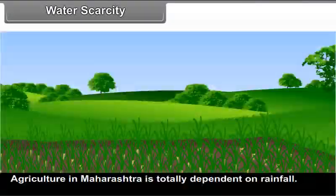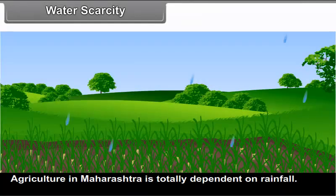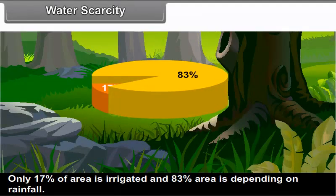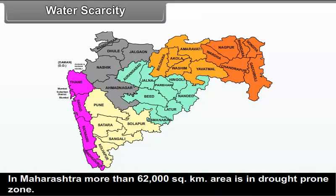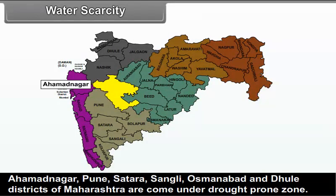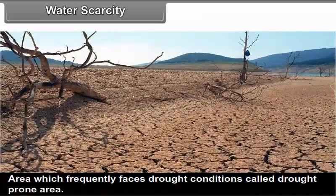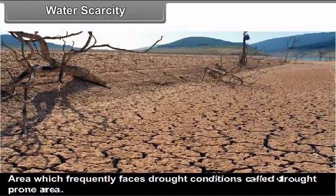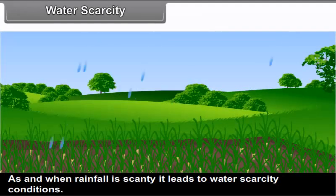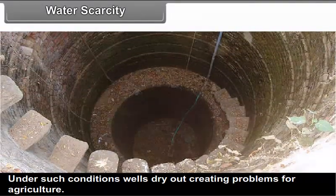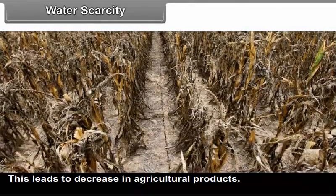Water Scarcity: Agriculture in Maharashtra is totally dependent on rainfall. Only 17% of area is irrigated and 83% of area depends on rainfall. In Maharashtra, more than 62,000 square kilometers area is drought prone zone. Ahmadnagar, Pune, Satara, Sangli, Osmanabad and Dhule districts come under the drought prone zone. As and when rainfall is scanty, it leads to water scarcity conditions, wells dry out creating problems for agriculture, which leads to a decrease in agricultural products.